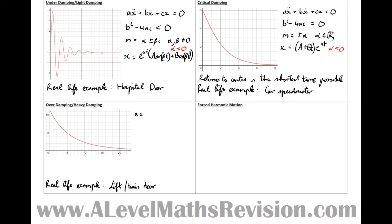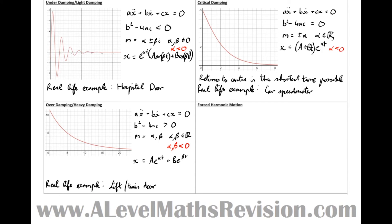Looking at it mathematically, for the general differential equation ax double dot plus bx dot plus cx equals zero, this is the case where b squared minus 4ac is greater than zero. So m equals alpha or beta, where alpha and beta are real. We know that the general solution is x equals ae to the alpha t plus be to the beta t. Both alpha and beta must be less than zero so that the function decays with time. We'd like to see over or heavy damping in a train or lift door so that it closes slowly, doesn't oscillate, but closes without injuring anyone.